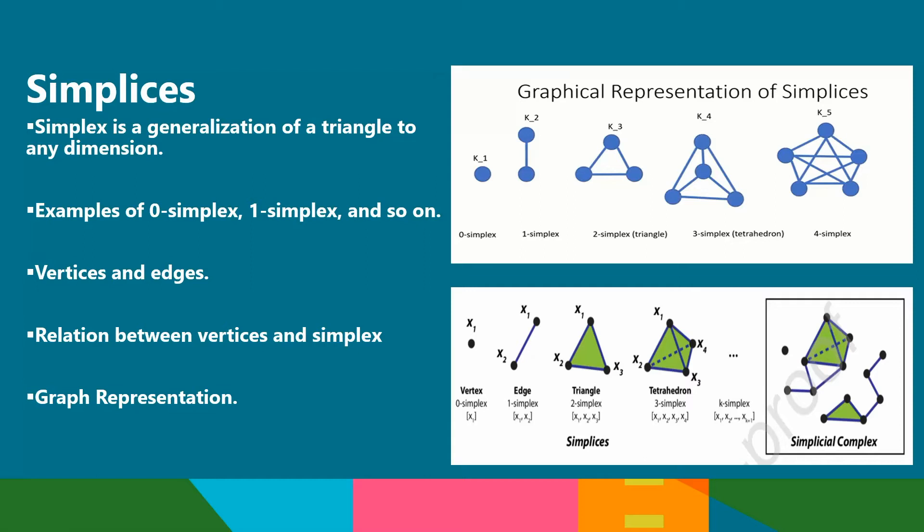This means we can draw out the vertices and edges of an n-dimensional simplex and get a graph representation. We can see a complete graph of k vertices represents the vertices and edges of a k-1 n-dimensional simplex. For example, the graph of three vertices where k is 3 represents the edges of a two-dimensional simplex or a triangle, whereas the graph of four vertices represents a three-dimensional simplex, which is a tetrahedron.